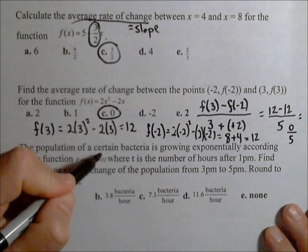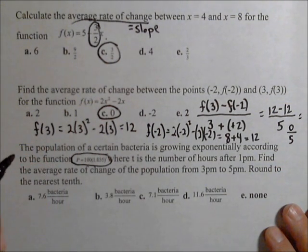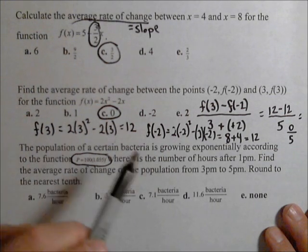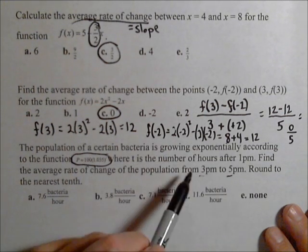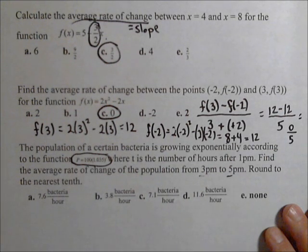And the last one, we have an exponential function. So now our change in output is going to come from the exponential function between 3 and 5. And t is the number of hours after 1pm, so we've got to be a little careful here.